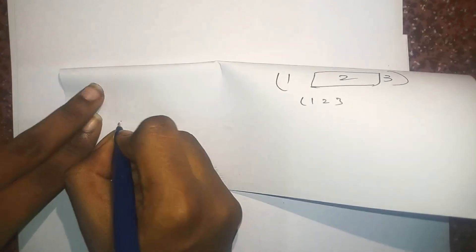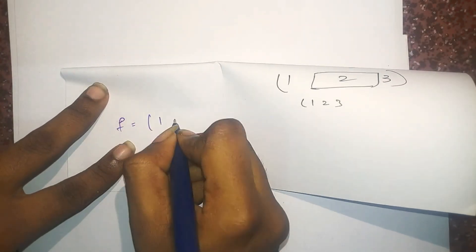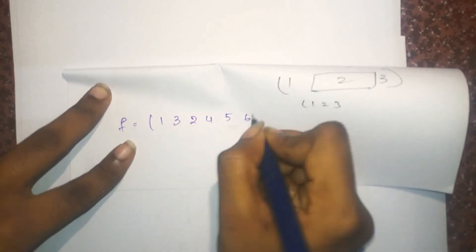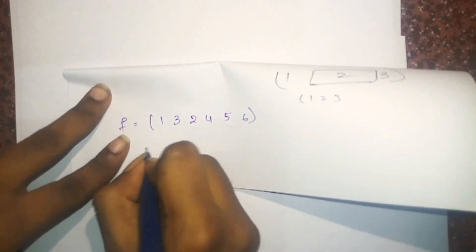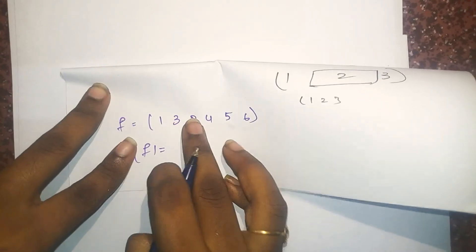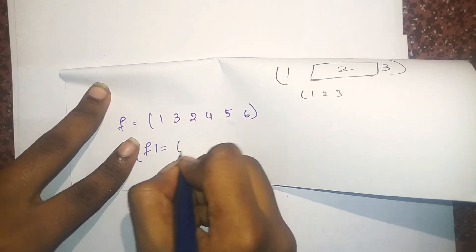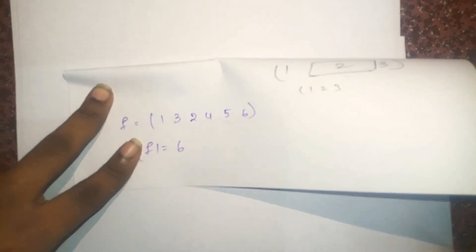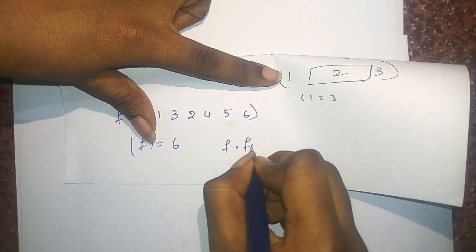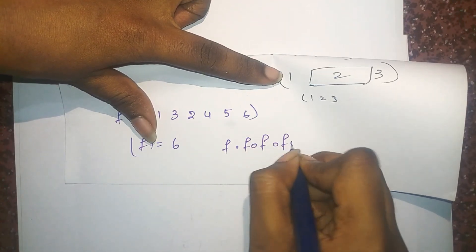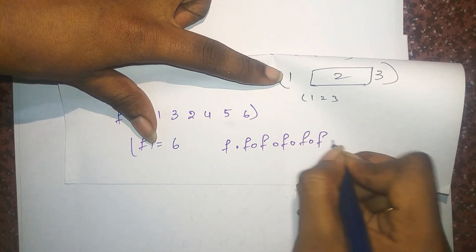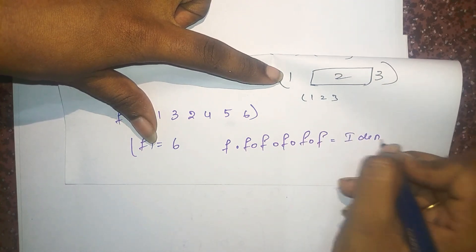Let's take the permutation (1 2 3)(2 4 5 6). The order of F is 6. The meaning of this is that F composed with itself 6 times — writing F six times — gives you the identity permutation.